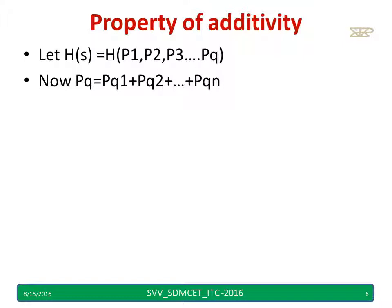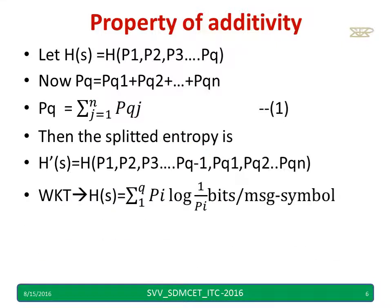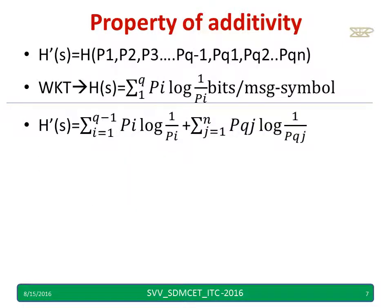Let H(S) be given by H(p1, ..., pq), where pq = pq1 + pq2 + ... + pqn, which I write as: pq = summation j=1 to n of pqj. Then the split entropy is given by H'(S) = H(p1, p2, ..., pq-1, pq1, pq2, ..., pqn). We know the entropy equation is given by pi * log(1/pi).